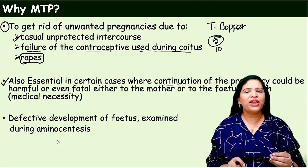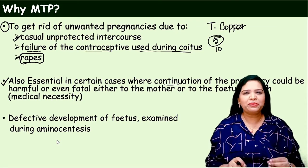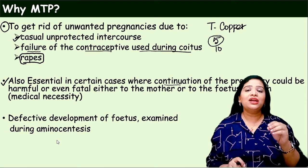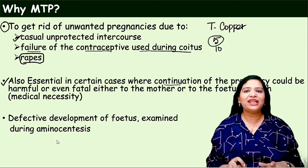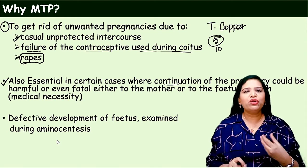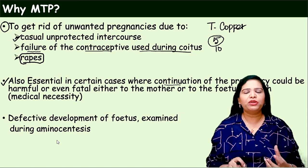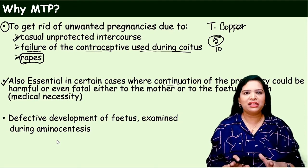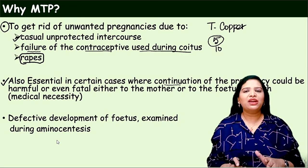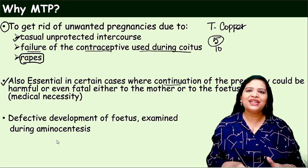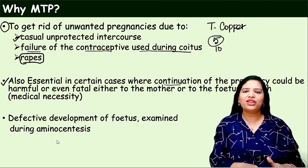Ectopic pregnancy is another reason — ectopic pregnancy means the fertilization occurs and the blastocyst gets implanted in the fallopian tube instead of the uterus. The embryo starts to grow in the fallopian tube. During scanning, if the doctor finds out that ectopic pregnancy is there, it is not safe for the mother. In such condition, the doctor advises the mother to do the MTP.